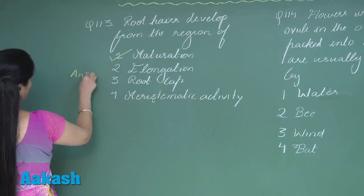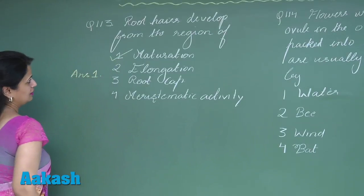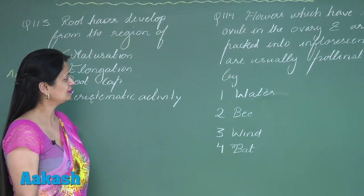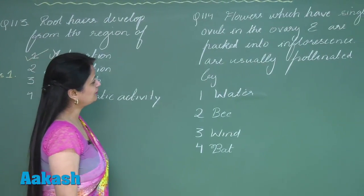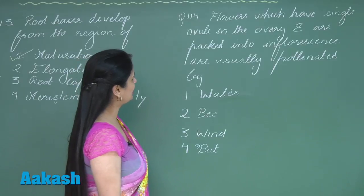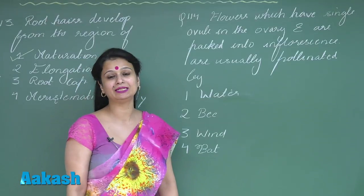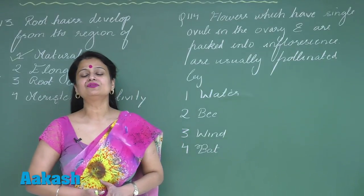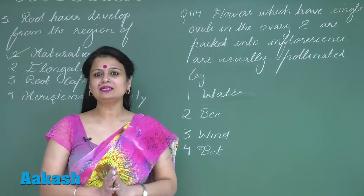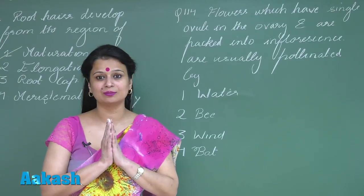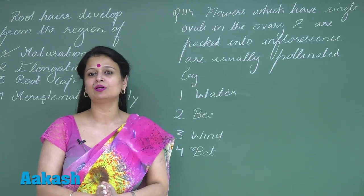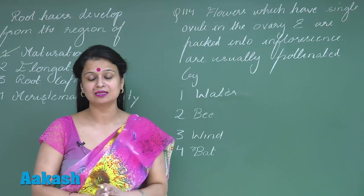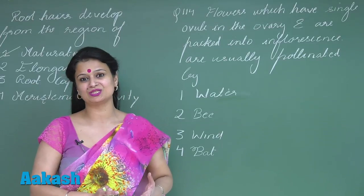Question 114 is about pollination. Flowers which have a single ovule and are packed into an inflorescence are usually pollinated by which agency? In wind-pollinated plants, pollen grains are produced in large numbers, and the number of ovules present in the ovary is less.